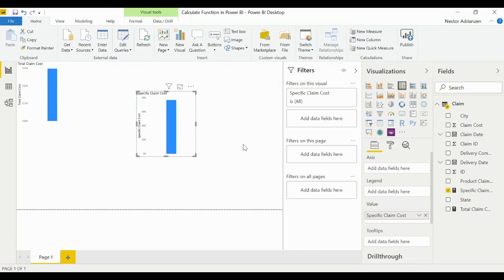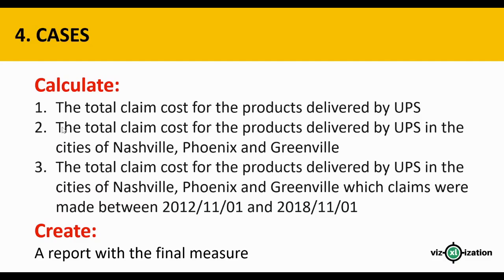Now let's go back to the presentation and look at the second question: we want to find the total claim cost for products delivered by UPS in the cities of Nashville, Phoenix, and Greenville. So we need to add another filter.